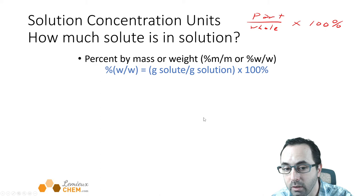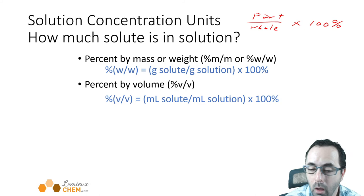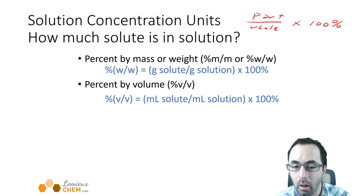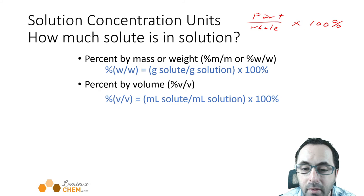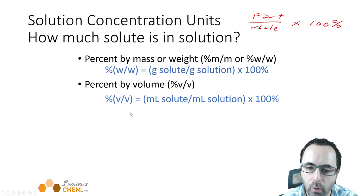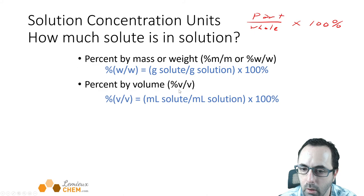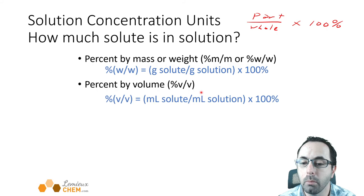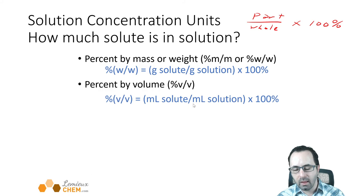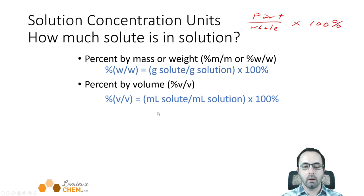Another way to measure concentration is percent by volume or percent V/V. You might have seen this if you buy hard alcohol or rubbing alcohol — it will say this on the bottle of vodka, for example. Again, the solute is on the top and the solution is on the bottom. The difference is that now we're measuring the amount of solute in milliliters and the amount of solution in milliliters. It works exactly the same way as percent by mass — just milliliters instead of grams. You could also use liters, as long as you're consistent with the volume unit.